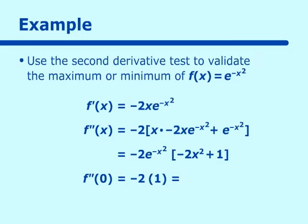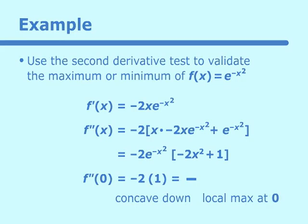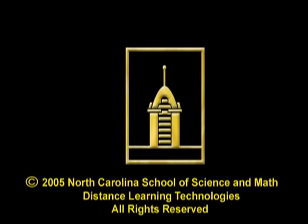Because f double prime at zero is a negative number, we have a function which is concave down at that point, which means we have a local maximum. And this concludes our lesson on maximum and minimum points.